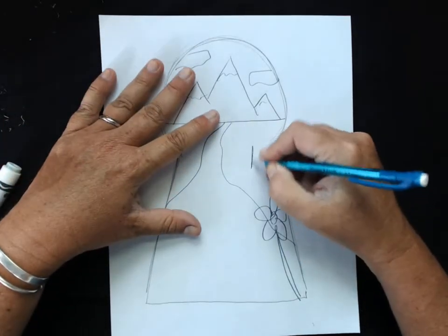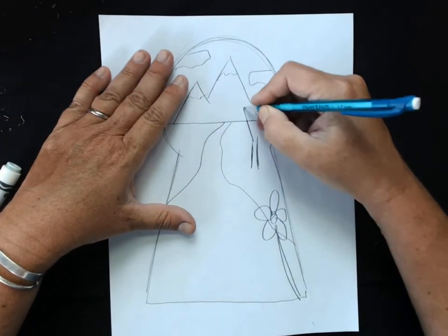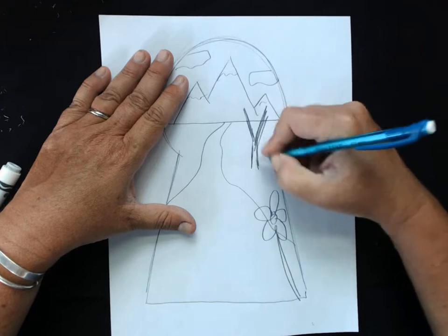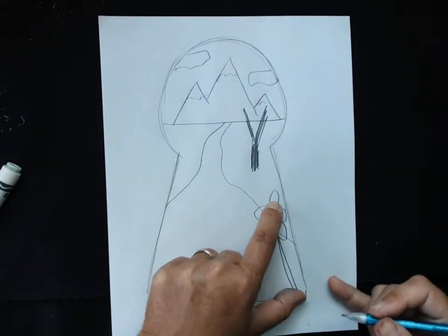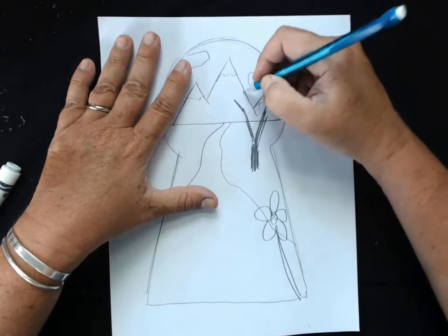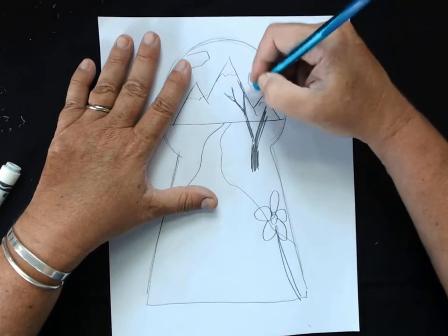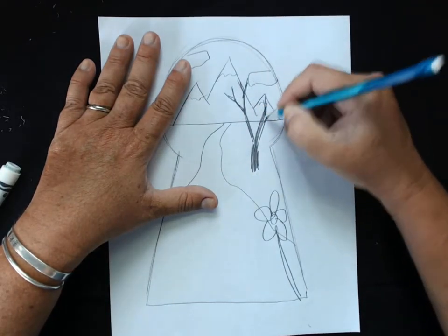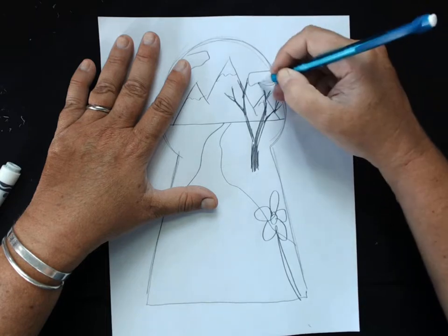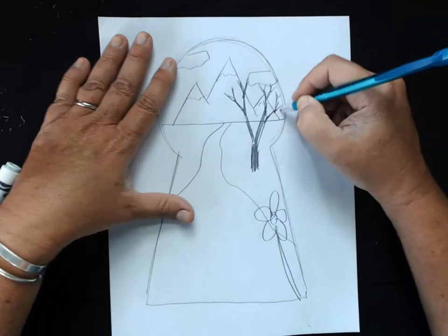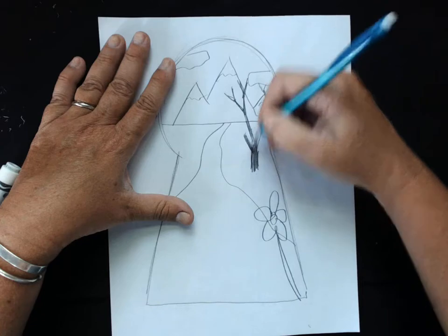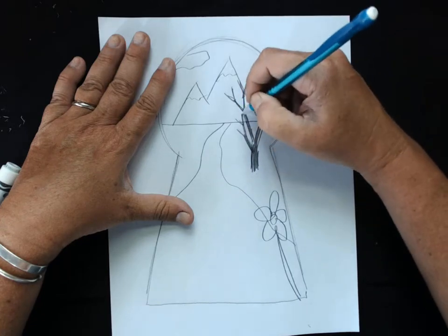For example, if I did a tree right here, it's a little bit smaller. If I put that flower up near that tree, that flower would look huge. We've talked about how to make trees, so if you want to check out that video if you don't remember.